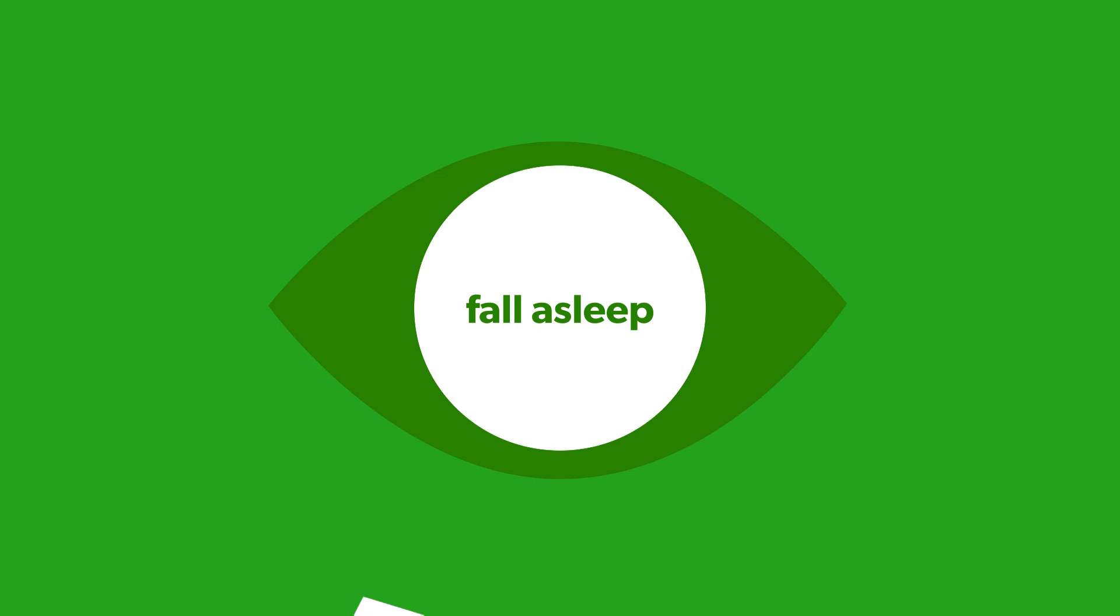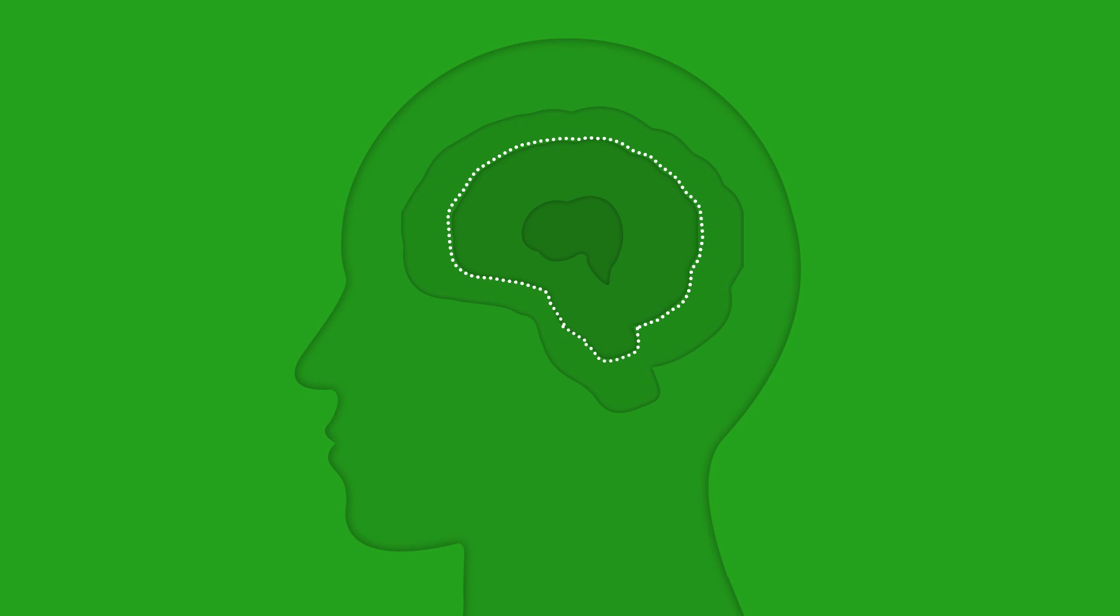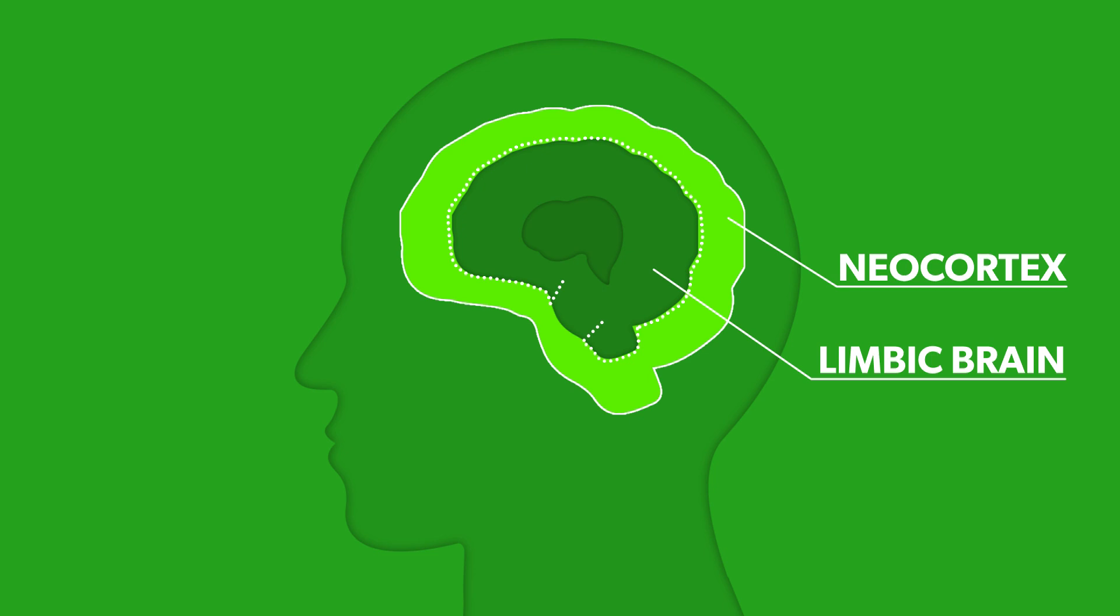During this state of mind, a door can be opened between two parts of our brain: the highly evolved neocortex and our limbic brain. The neocortex is the area of the brain that makes us human. This is where we reason and make decisions.